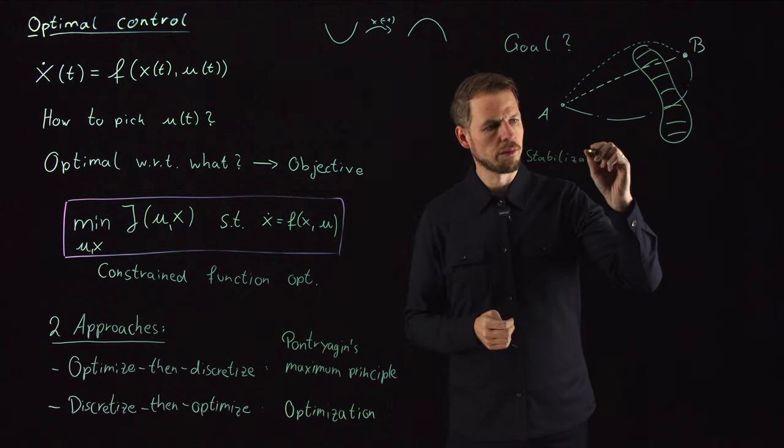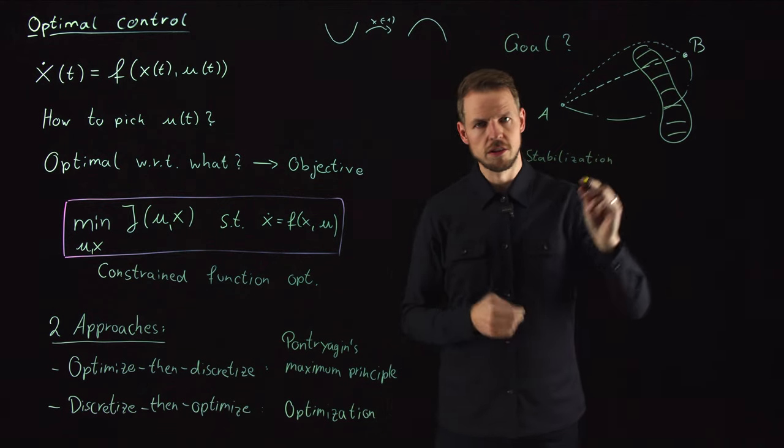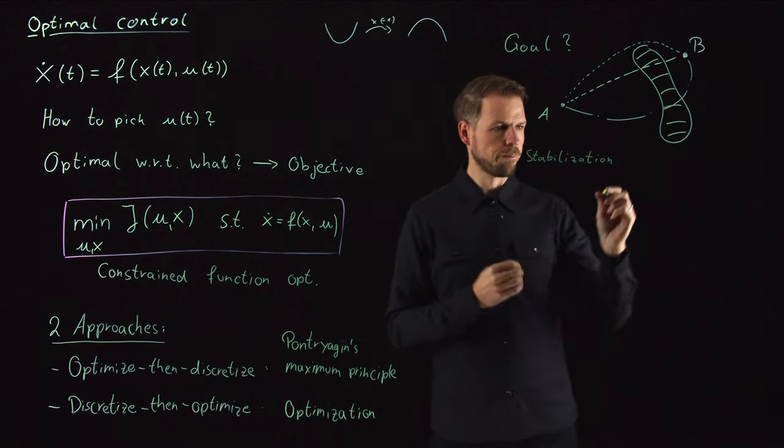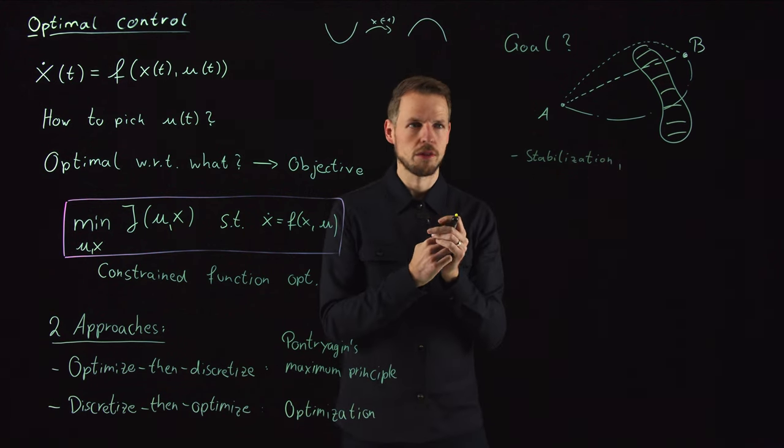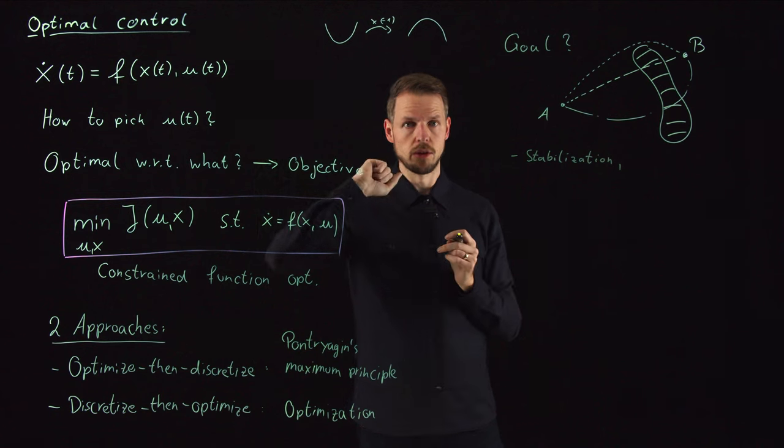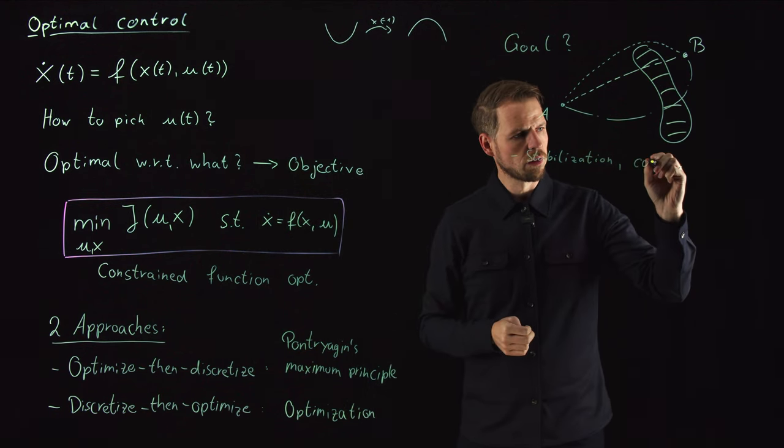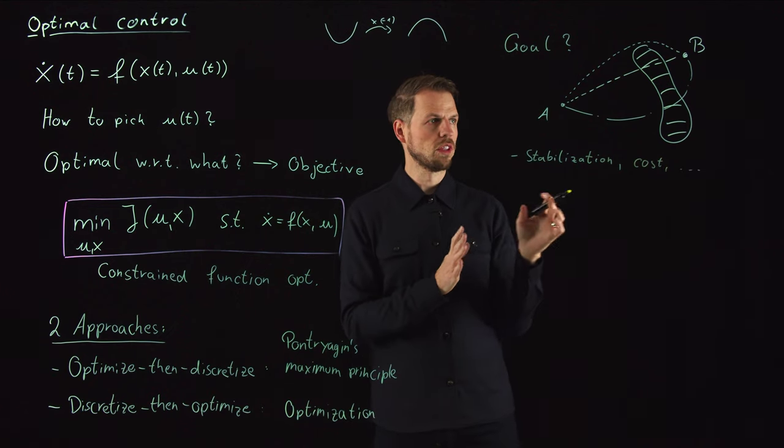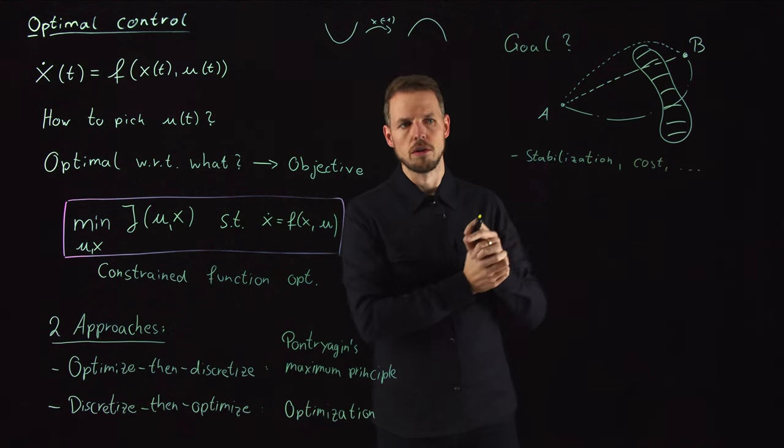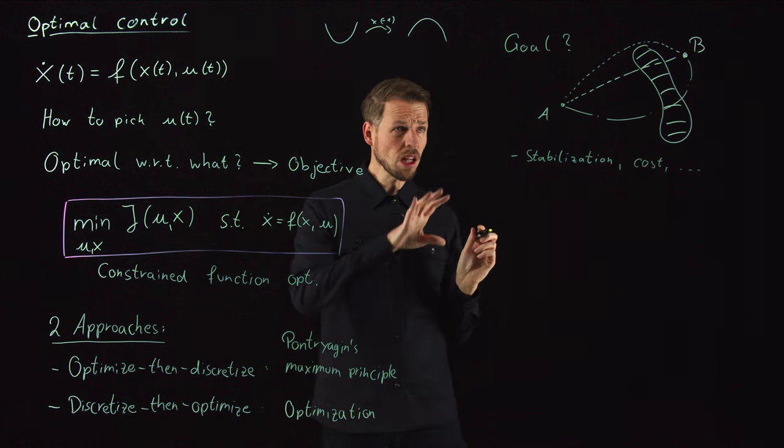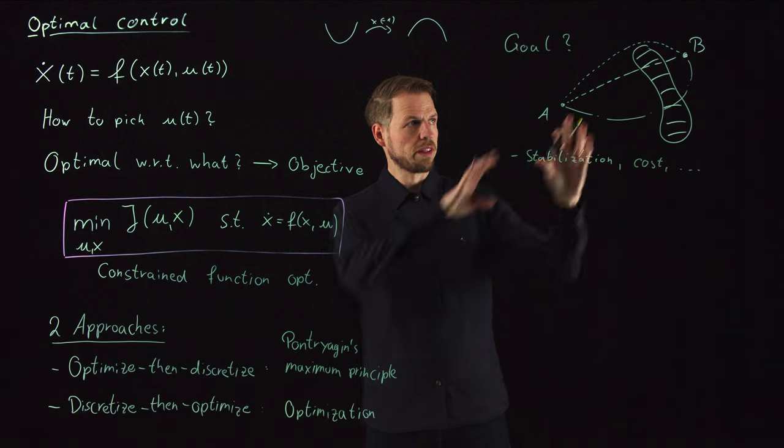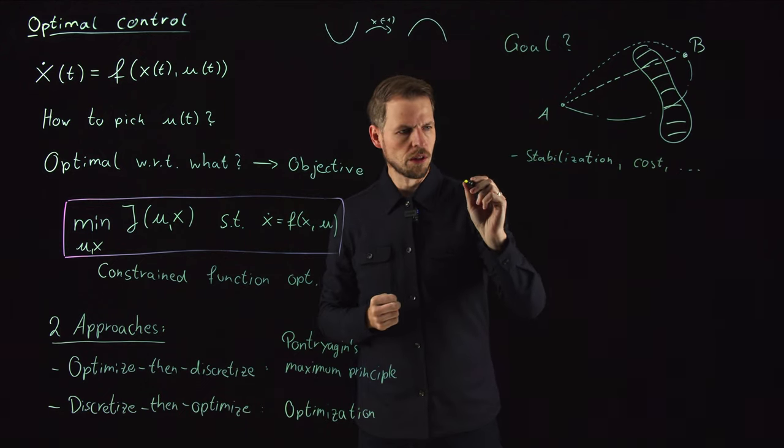You can also have different objectives like stabilizing a system in feedback control—the system is running in real time and you want to stabilize it even with disturbances from outside. There may be economic objectives like minimizing the control input or some cost function. There are many more situations you can conceive, and combinations of different things.